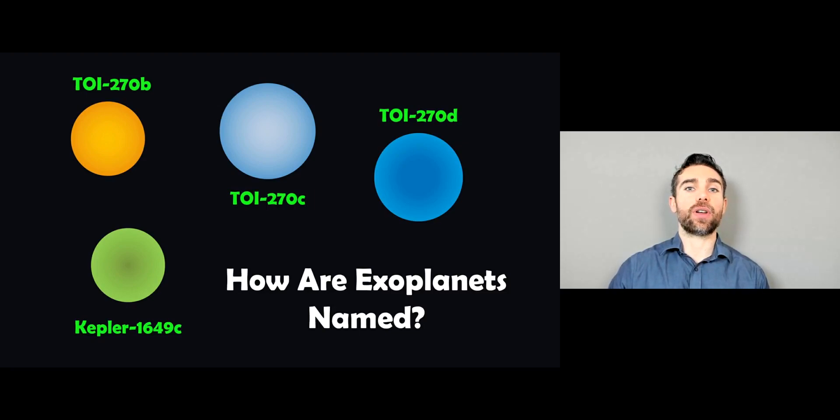Welcome to this video where we're going to have a look at how exoplanets get their name. Now the first thing to note is that an exoplanet is a planet that orbits a star other than our Sun, so it's outside of our solar system.